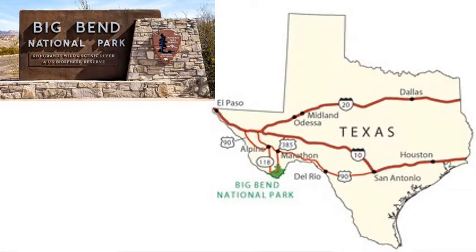My primary destination was the Big Bend National Park in Texas. This area of Texas is called the Big Bend because the Rio Grande River comes south and then bends back north before going south again. This area is called the Big Bend area of Texas because of the shape of the river that flows through there.